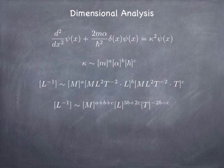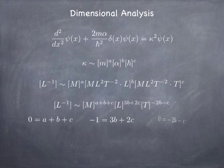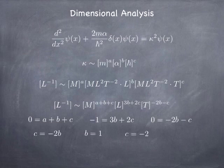If negative 1, that's the 1 over l, is 3b plus 2c, you can see how things have to add up, and we know that negative 2b minus c has to be 0, since there's no time in 1 over length. And then we get three equations and three unknowns, and we can solve them. So, we get b is equal to 1, c is equal to negative 2, a is equal to 1.